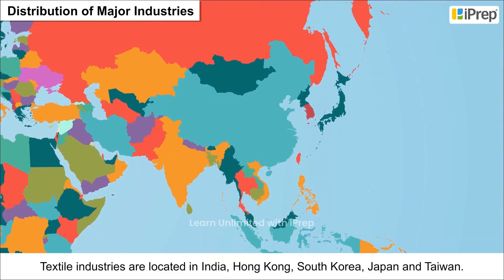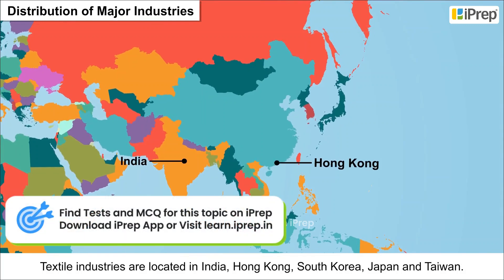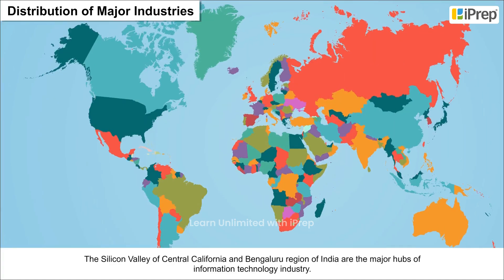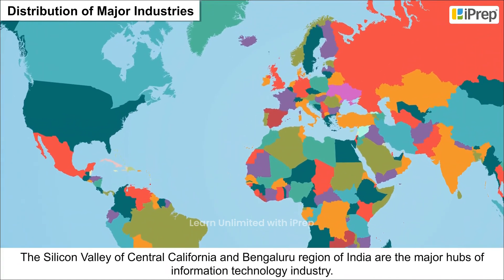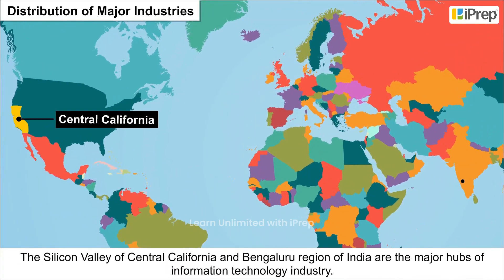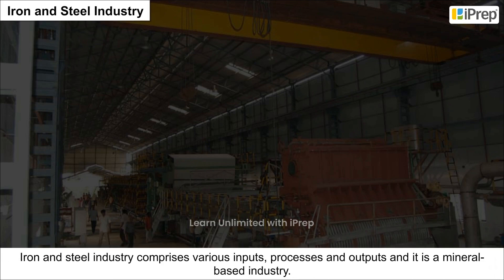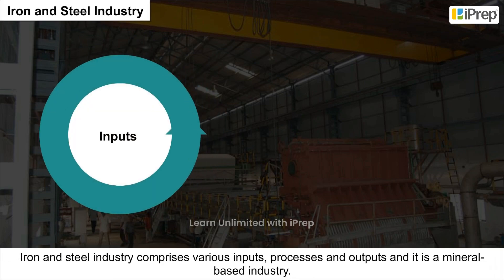Textile industries are located in India, Hong Kong, South Korea, Japan, and Taiwan. The Silicon Valley of Central California and the Bengaluru region of India are the major hubs of the information technology industry.